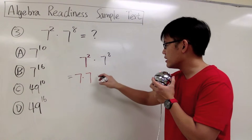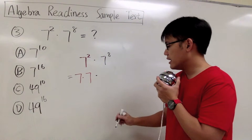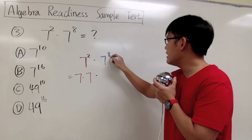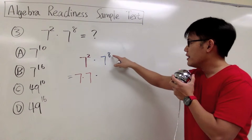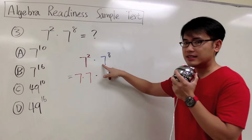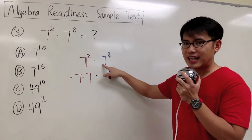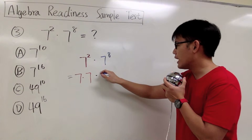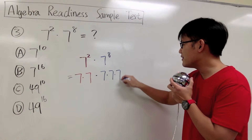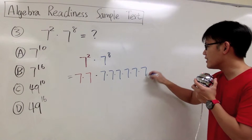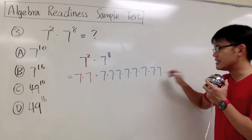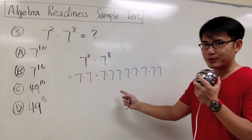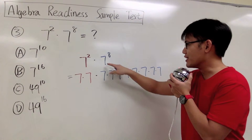Now let me bring down the original multiplication and focus on the second part: 7 to the 8th power. Same idea. The power 8 tells us that we have to write down the 7, the base, 8 times, and then multiply them together. So for 7 to the 8th power, we will have 7 times 7 times 7 times 7 times 7 times 7 times 7 times 7 — eight 7s in blue, multiplying together.